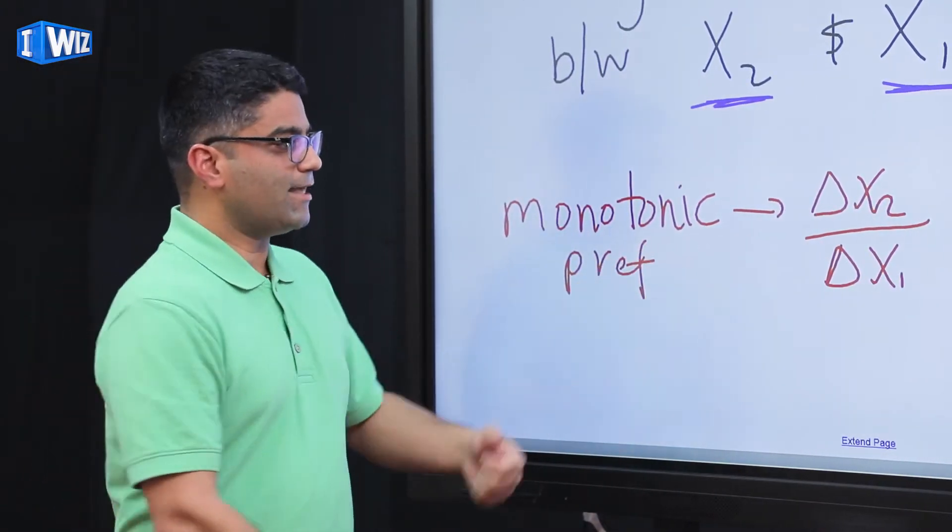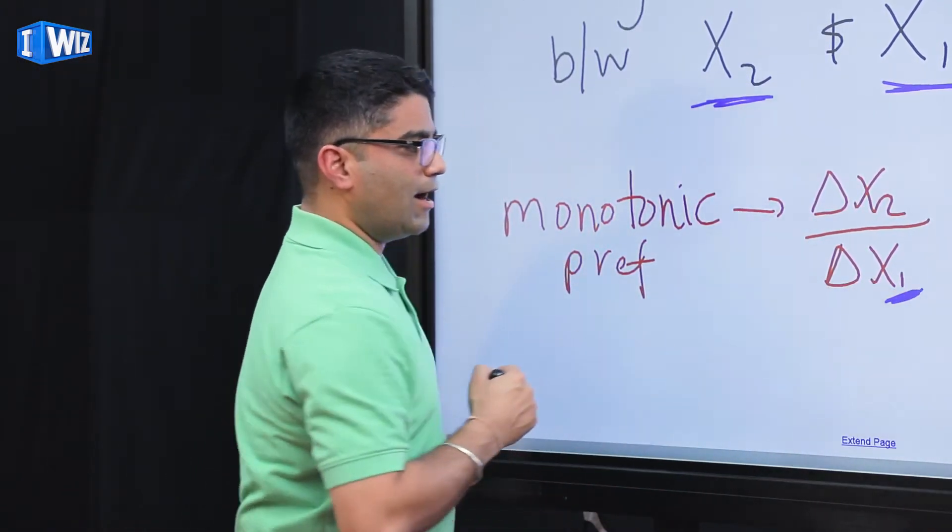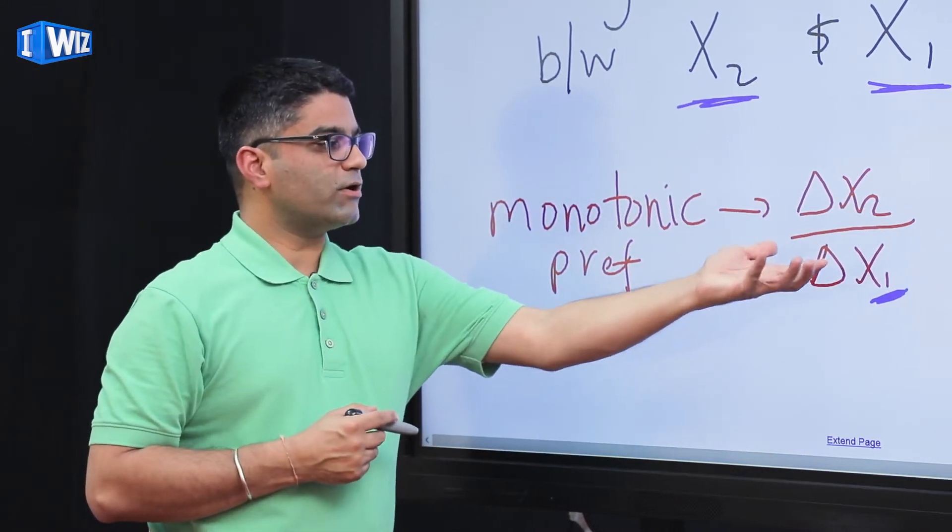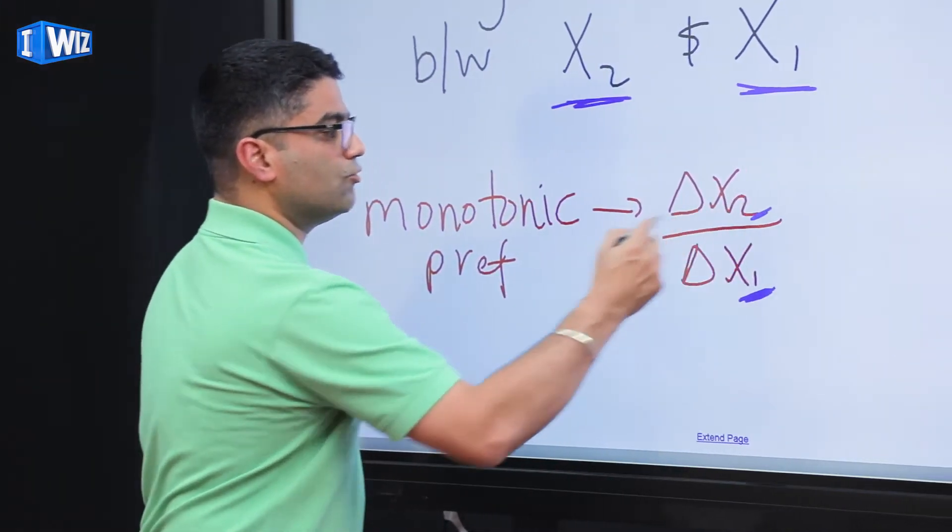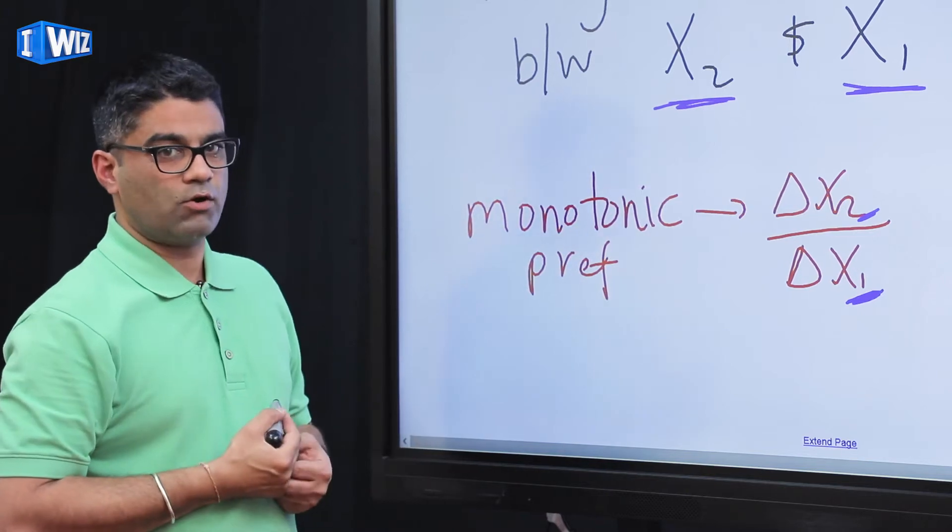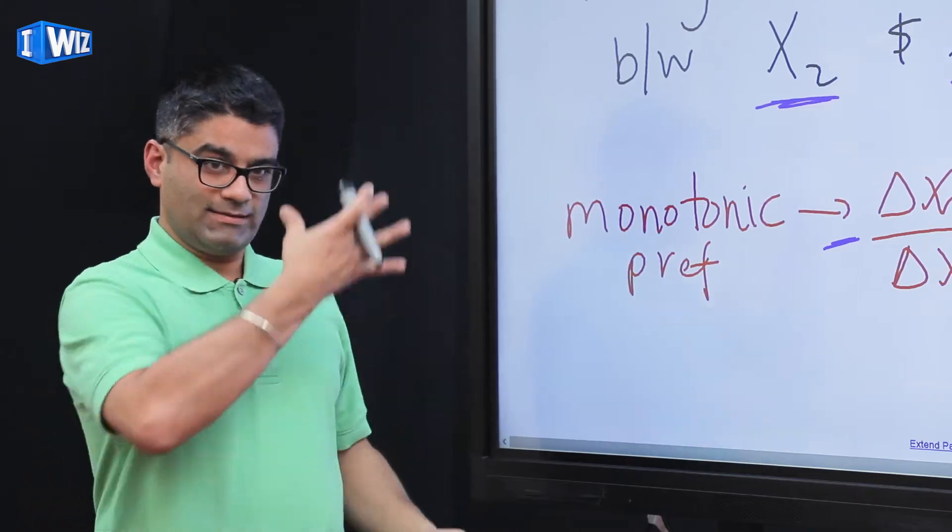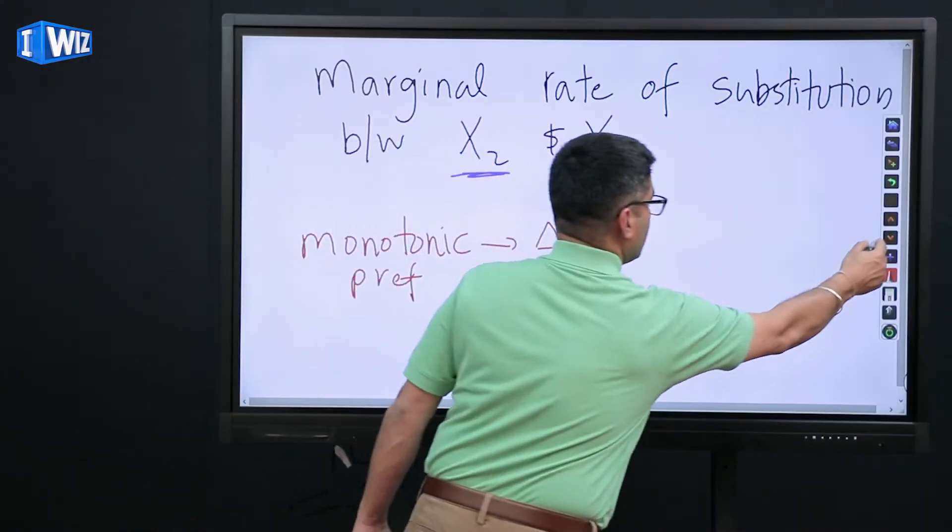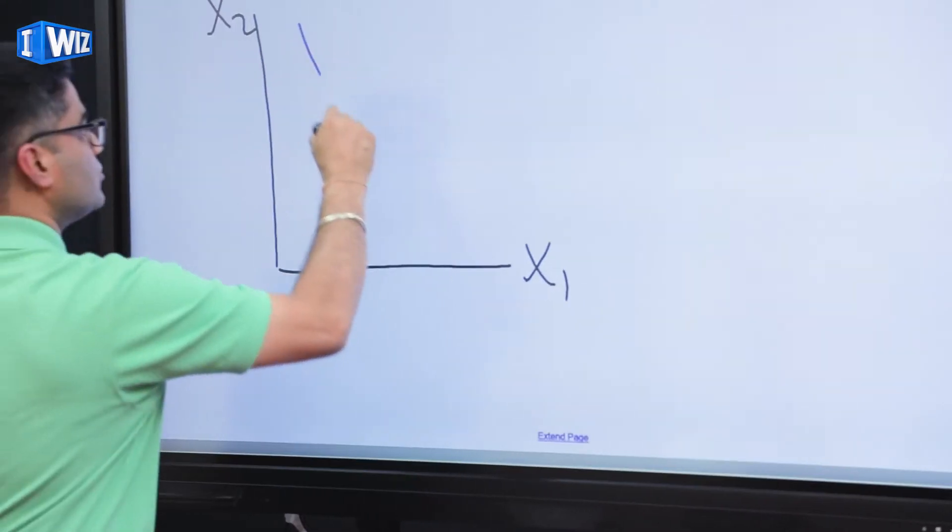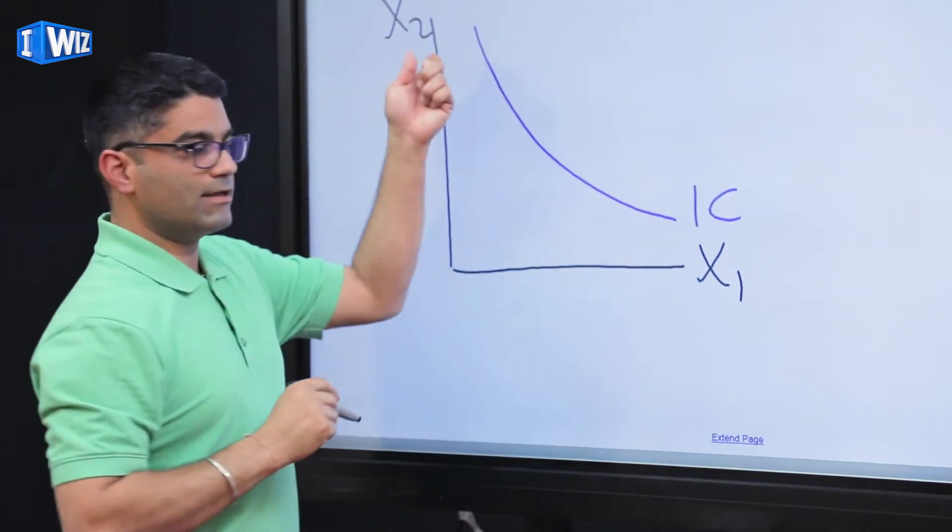monotonic preferences tells us that if I am going to be equally happy, if x1 is going to go up, x2 must go down. Or if x1 is going to go down, x2 must go up. So the sign of the slope will always be negative. Hence the shape of the indifference curve is the way I drew it last time, which is negatively sloped.